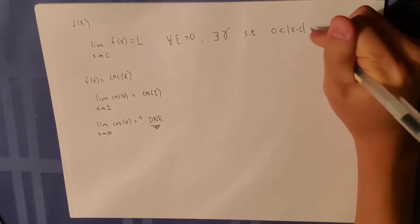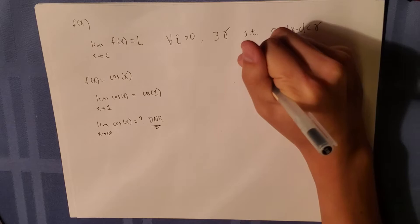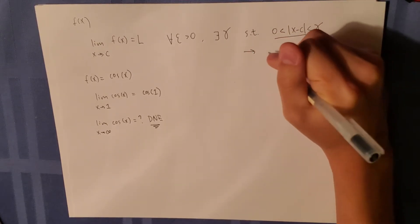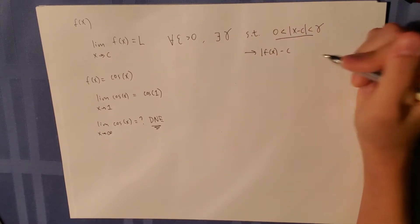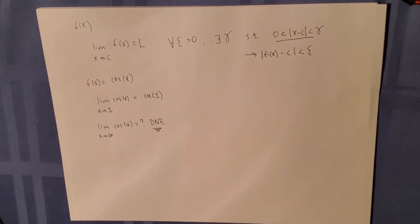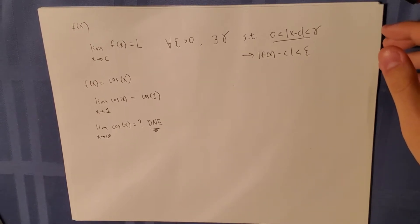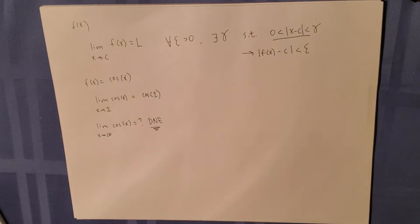which is less than delta, implies that the absolute value of f of x minus c is less than epsilon. So that's the formal definition. Let's think about this. Let's draw a picture first.